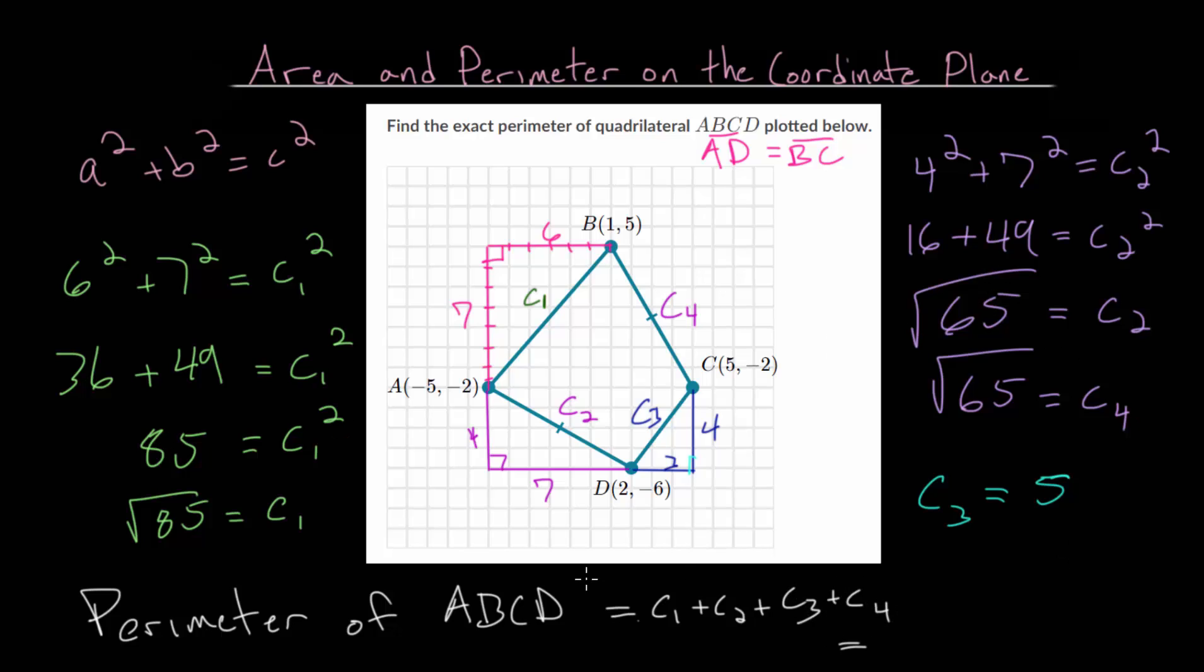And we know c1, that's the square root of 85. And we're going to add to that c2 and c4. Those are the same thing, so we're really just adding twice that. So twice the square root of 65. And then lastly, we're just going to add 5 to that, since that is c3.